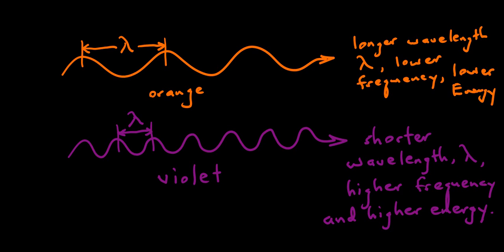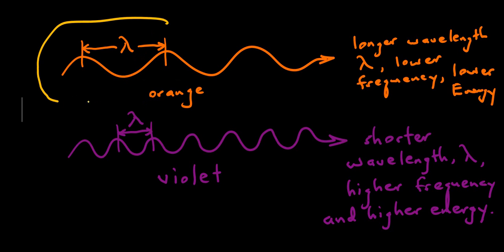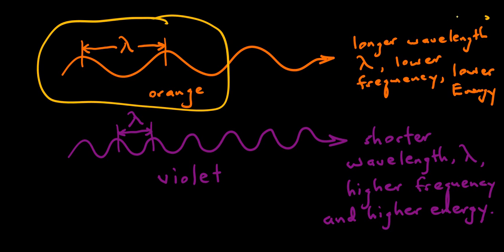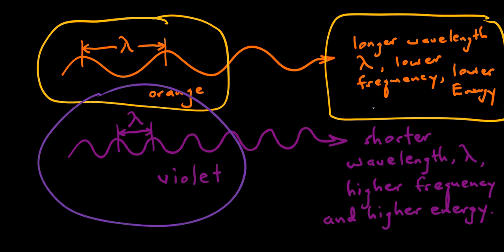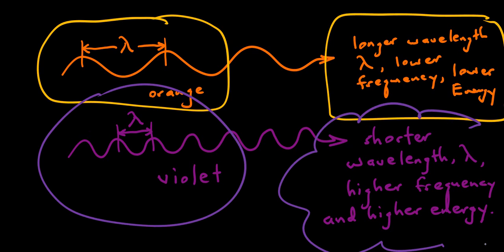The distinction between different types of light — lower energy and high energy — is based primarily on the wavelength of light being emitted. A longer wavelength corresponds to a lower frequency, which is also a lower energy. Shorter wavelength means a higher frequency, and a higher frequency corresponds to a higher energy of light being emitted by an electron jumping down from a high to a low energy state.